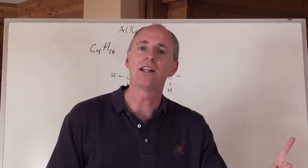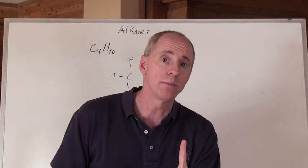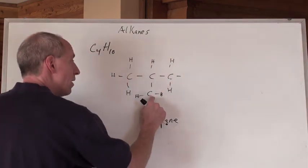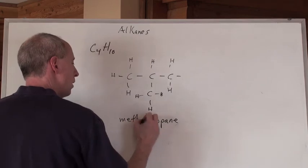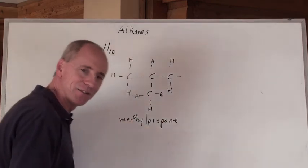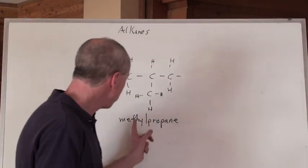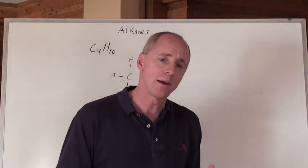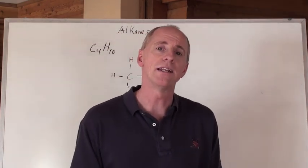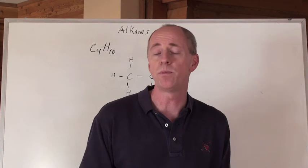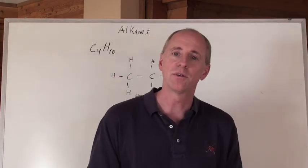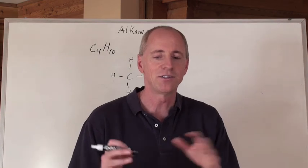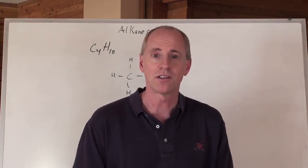It's just a branch coming off of the longest chain. What we call that, then, is we end all branches in yl. All the substituents end in yl. So it's a one carbon branch. So it's a meth, but it ends in yl. So it's a methylpropane. This one's called methylpropane. Sometimes we're going to have to tell where the branch is located. Not in this one. You don't need to because it would be redundant. That's just what this is called, methylpropane. That would be an isomer of butane.